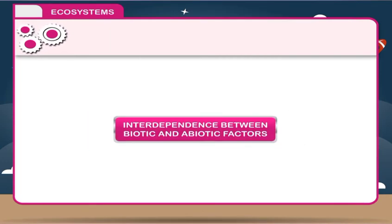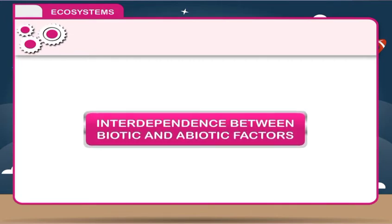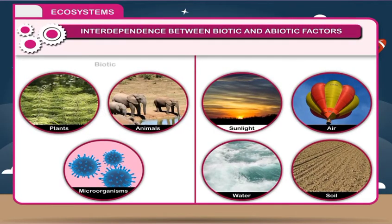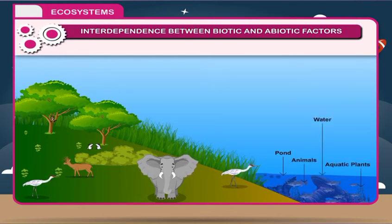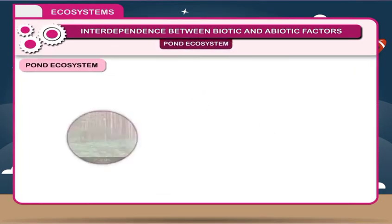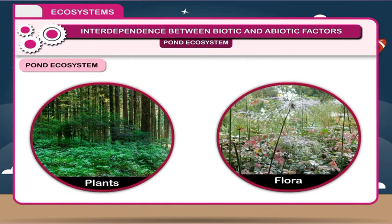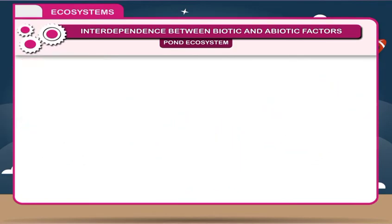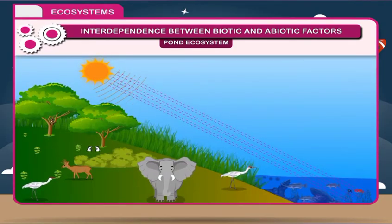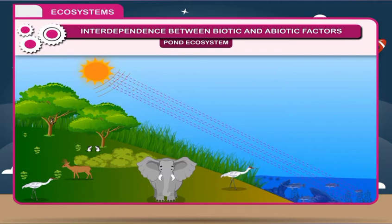Interdependence between Biotic and Abiotic Factors: To understand the relationship between biotic and abiotic factors, let us study the pond ecosystem. A pond ecosystem is full of varieties of aquatic plants and animals as well as water, air, soil, and minerals. The plants or flora found in pond ecosystems include submerged plants, floating plants, and algae. These autotrophs are producers who trap sunlight and, by the process of photosynthesis, give out oxygen and purify the pond.